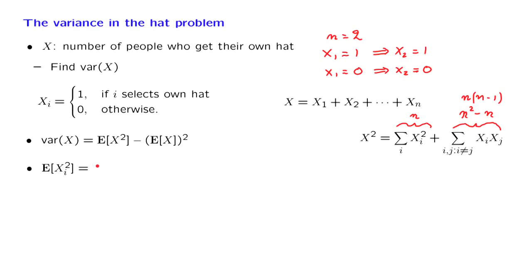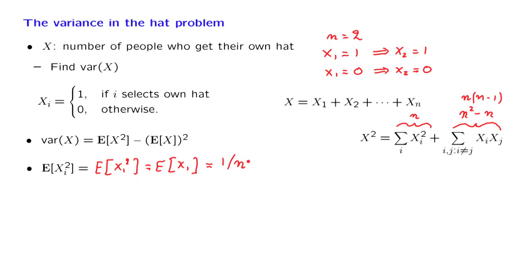By symmetry, E[X_i²] equals E[X_1²]. Since X_1 is a Bernoulli 0-1 random variable, X_1² always takes the same value as X_1 — because 0² = 0 and 1² = 1. So E[X_i²] = E[X_1] = 1/n.